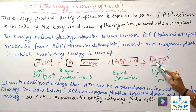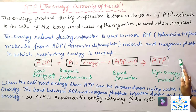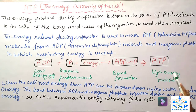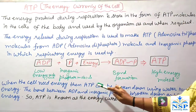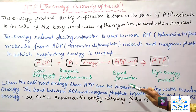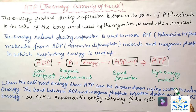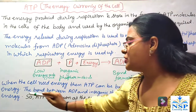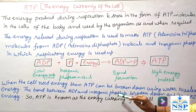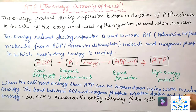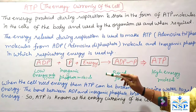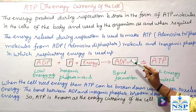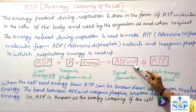ATP, adenosine triphosphate, is a high energy molecule. When the cell needs energy, ATP can be broken down using water to release energy. The bond between ADP and inorganic phosphate is broken down and 30.5 kJ of energy is released.